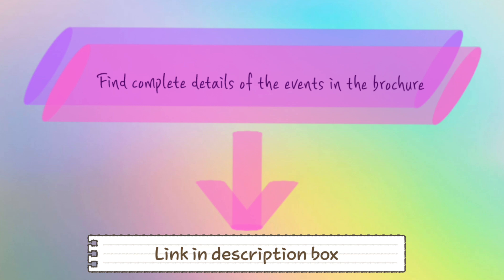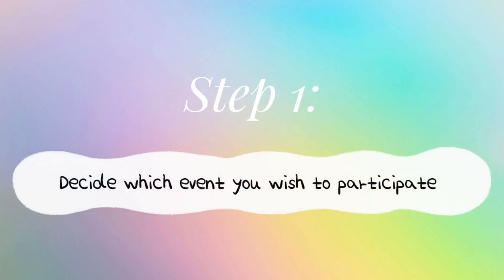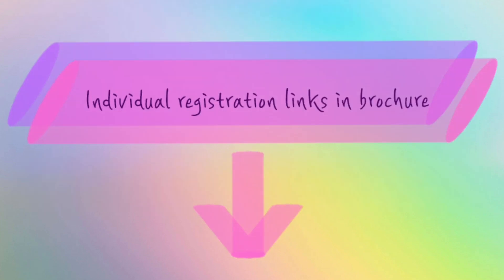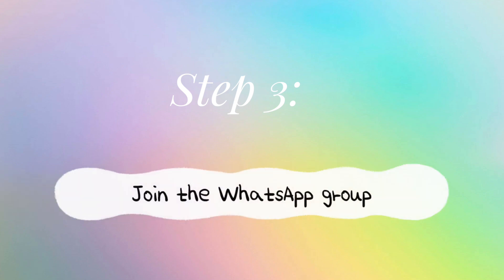Now I'm going to explain the simplest method to register for this event. Step number one: decide which particular event you are interested in. Once that decision is made, there is an individual registration link for every event. Click on the registration link of the event you're interested in. You will be directed to a Google Form — fill it, submit it, and you will get a link to join the WhatsApp group.